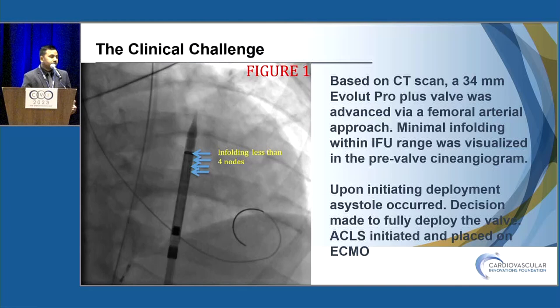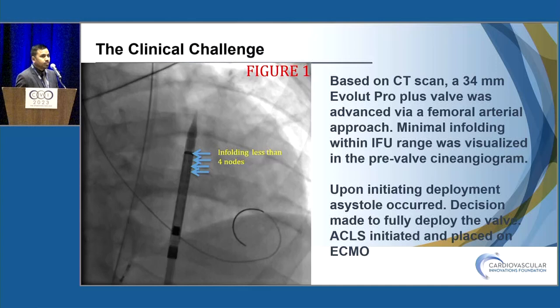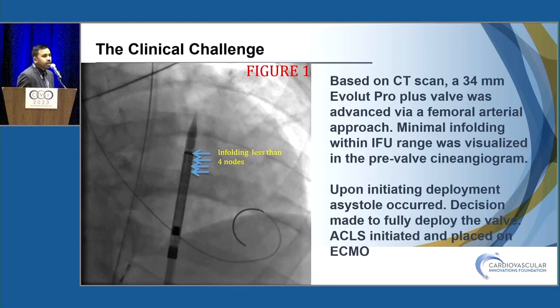The clinical challenges start here. A 34 mm Evolut Pro Plus valve was advanced via a femoral arterial approach. Uniquely, there was minimal infolding within the IFU range, visualized in the pre-valve cine-angiogram. We called the vendor, who said we could proceed. Upon initiating deployment, asystole occurred and we decided to fully deploy the valve. ACLS was initiated and ECMO was started as well.